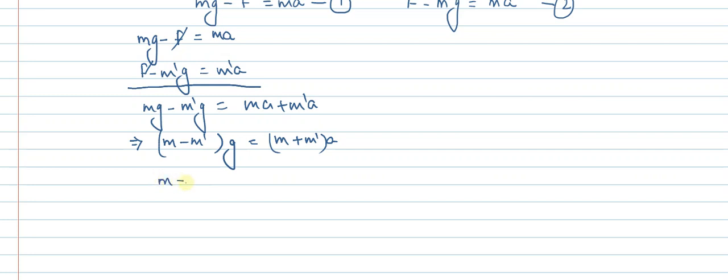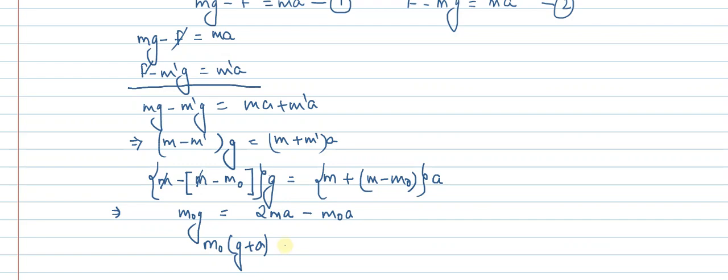What we get is: in place of m', we put m minus m₀. So m minus (m minus m₀) into g equals m plus (m minus m₀) into a. Expanding this equation, we get m minus m cancels, giving us m₀g on one side. On the right side, m plus m gives 2ma minus m₀a. Bringing m₀ terms together: m₀(g plus a) equals 2ma.